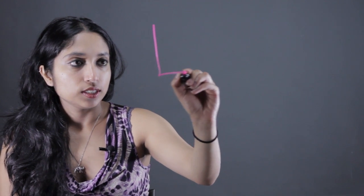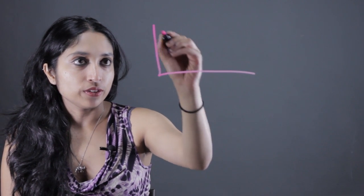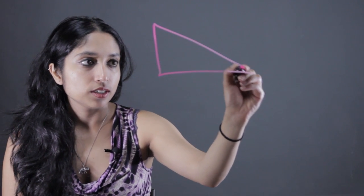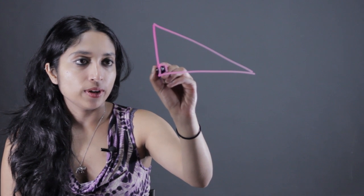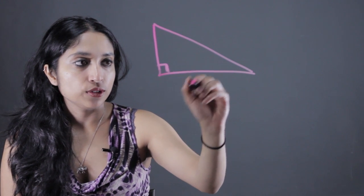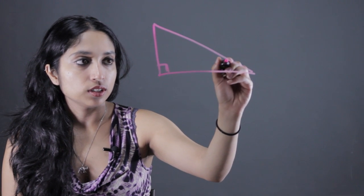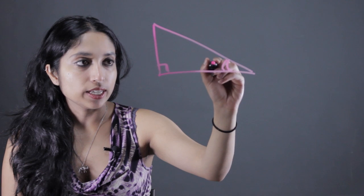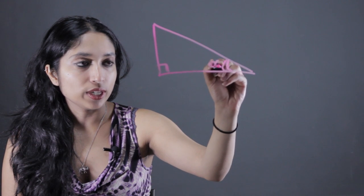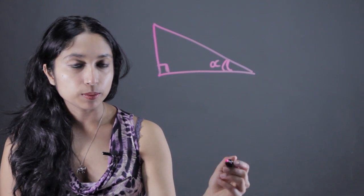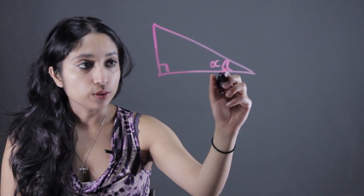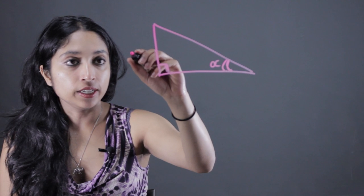I'm going to draw that triangle for you right now. This is our triangle right here, and this is that right angle, that 90 degree angle. We're going to be working with this angle here — we're going to call it alpha. I'm going to label the sides of the triangle based on this angle.